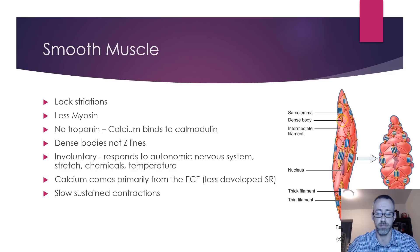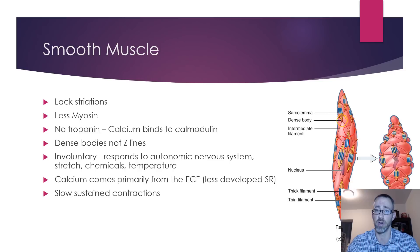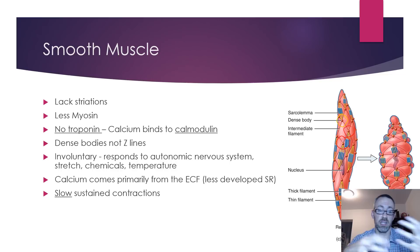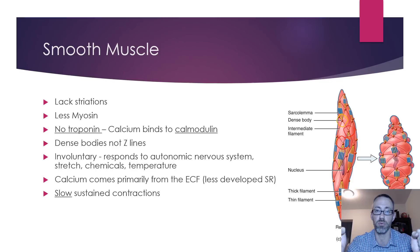Smooth muscle is much more dynamic. It responds to the nervous system, to stretch — for instance, the bladder fills and stretches — to chemicals such as hormones like epinephrine (adrenaline), and to temperature. On a cold day the skin becomes paler as smooth muscle in blood vessel walls constricts, reducing blood flow to distal extremities like fingertips and toes.